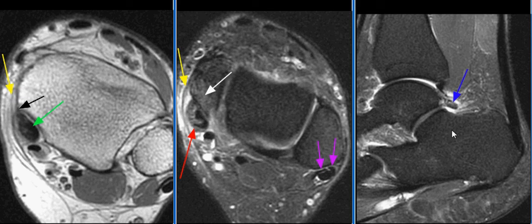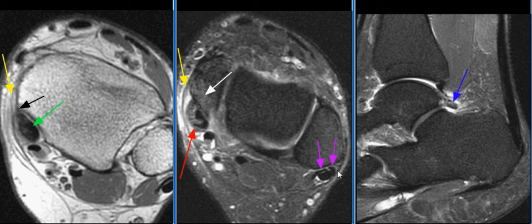A small os trigonum is seen with mild edema and adjacent synovitis. There is moderate peroneus brevis tendinosis with a longitudinal split tear at the level of the lateral malleolus.